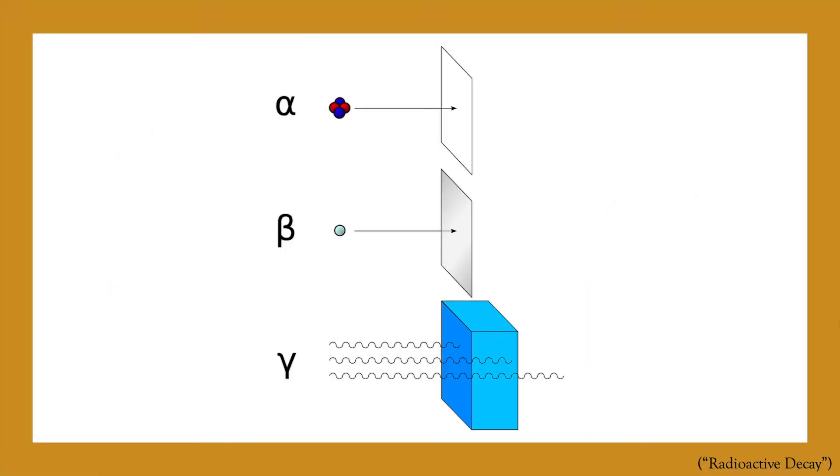Alpha particles, or the positively charged nucleus of a helium atom emitted from an unstable nucleus, are perhaps the weakest form of radiation, with the ability to not even be able to penetrate a piece of paper.